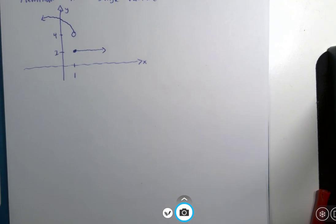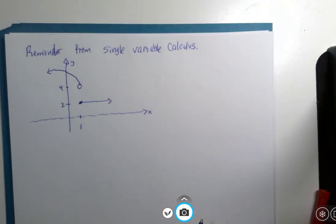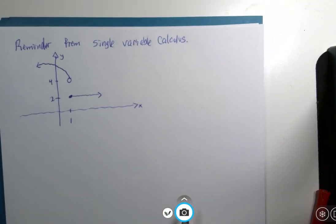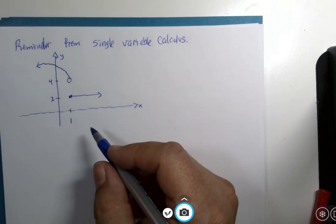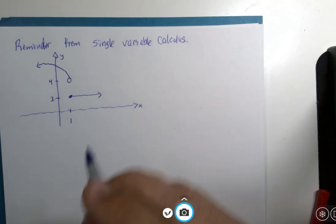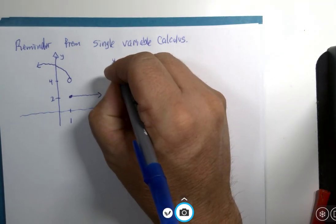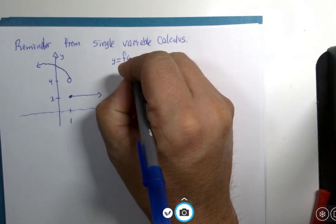As a reminder, from the single variable calculus days, x and y axis, this could be considered a piecewise defined function. And we'll just call this function y equals f of x.